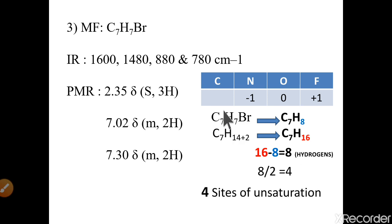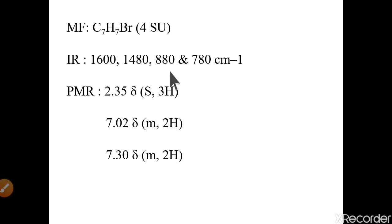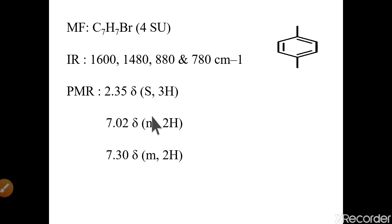Looking at the IR: peaks at 1600, 1500, 880, and 780. The 1600 peak is characteristic of a C=C double bond. The peaks at 880 and 780 are characteristic of a para-disubstituted benzene ring, confirmed by the NMR showing two sets of 2H protons — indicating a symmetrically para-disubstituted benzene ring.